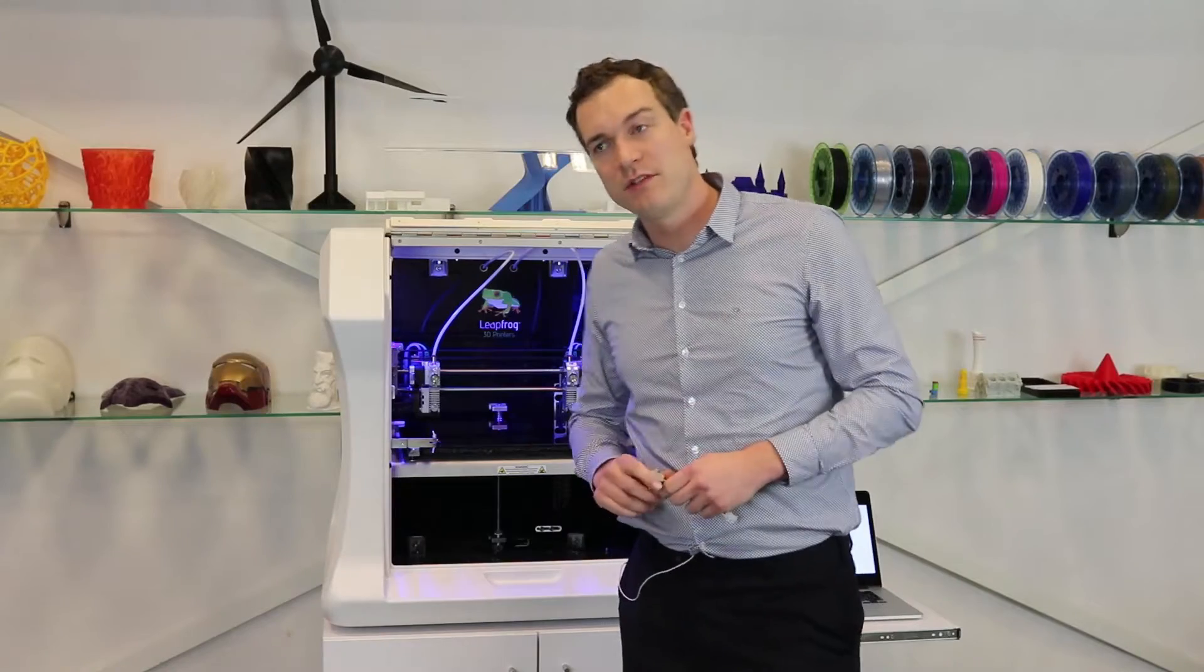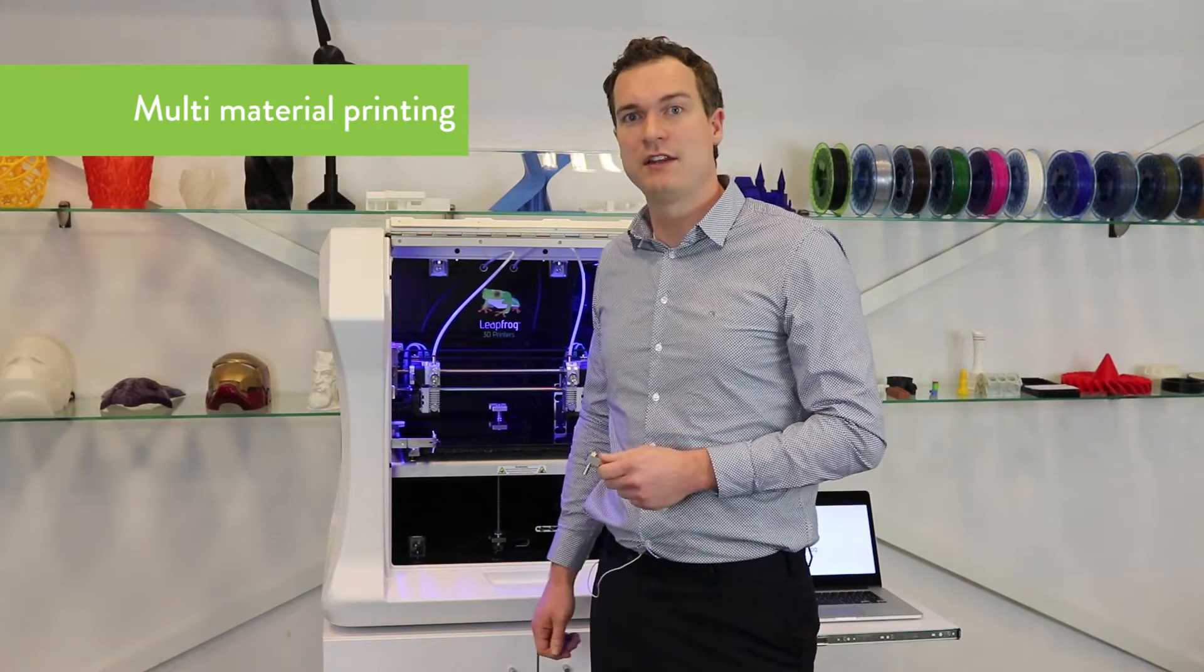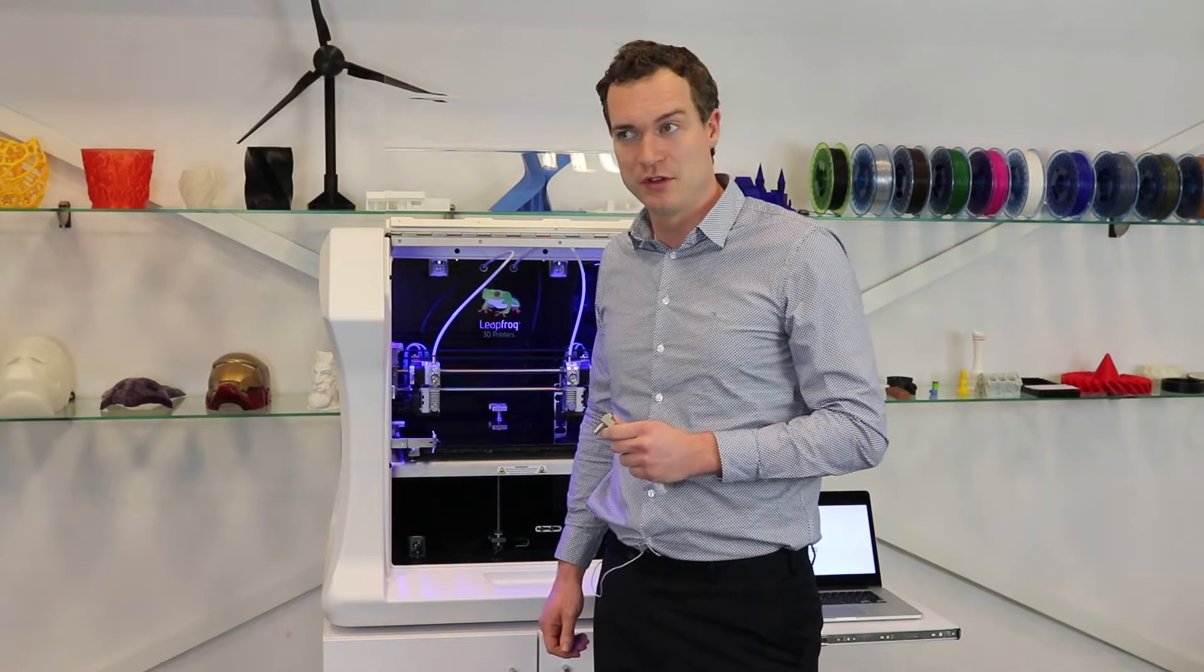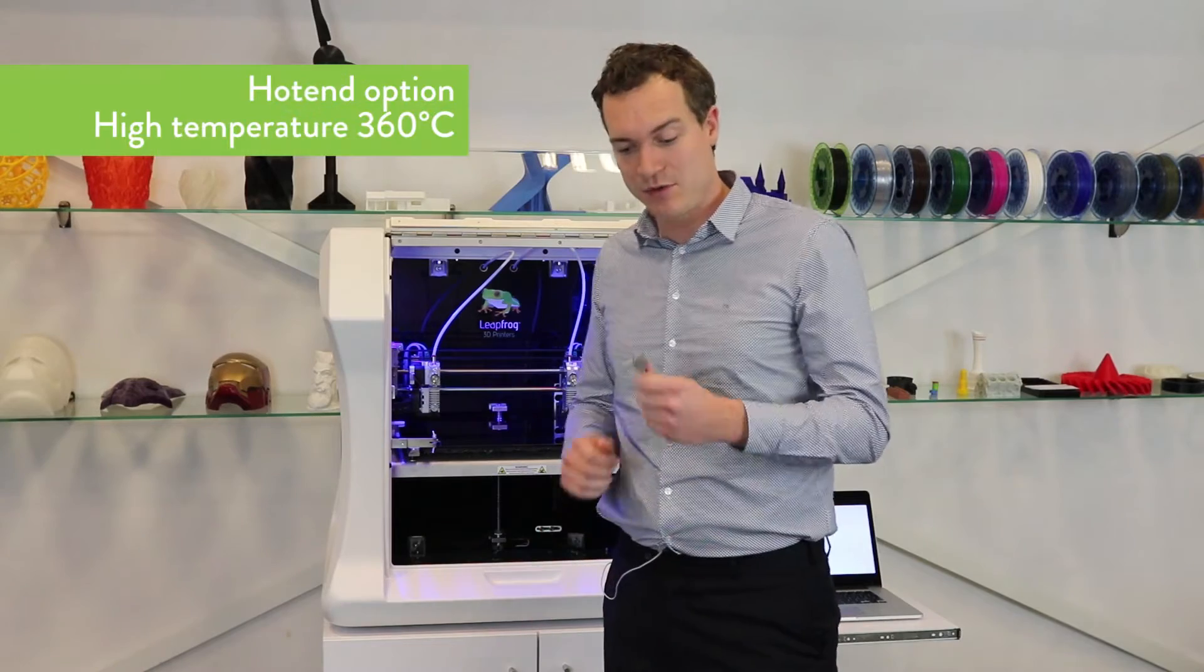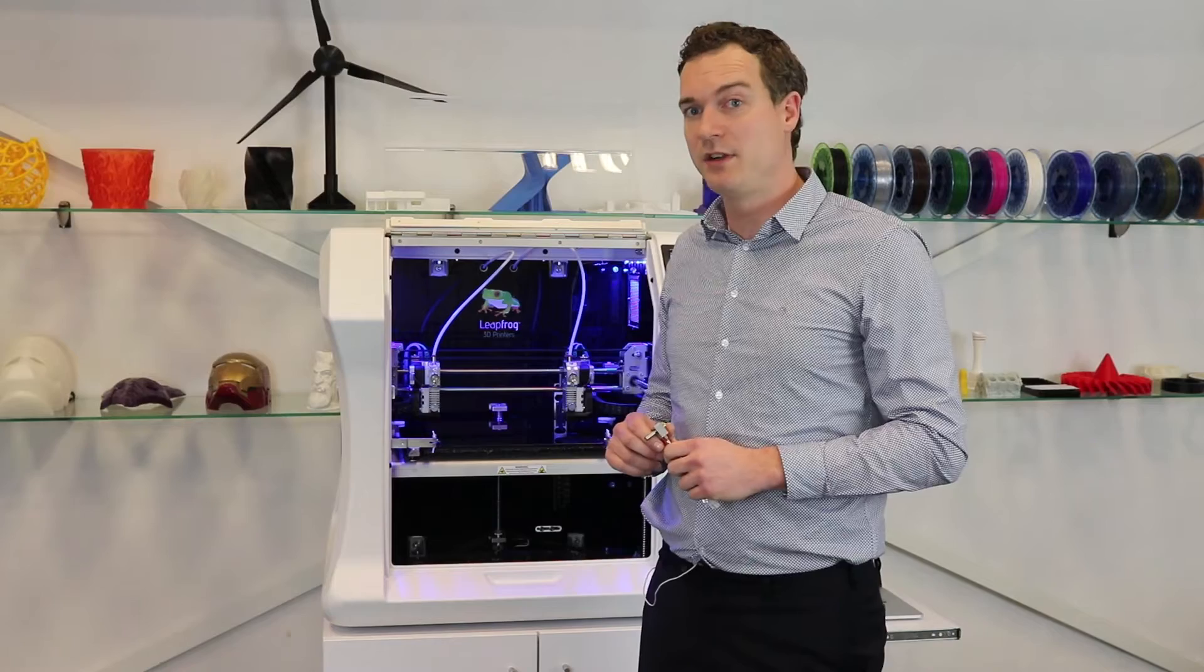Let's move on to even more interesting stuff. The Bolt can print multiple materials and to enable that, there are a bunch of different nozzles available. For instance, we have a high temperature nozzle which can print up to 360 degrees and allows printing with materials such as nylon or polycarbonate.